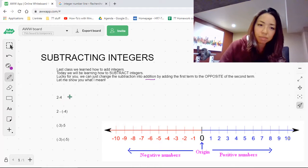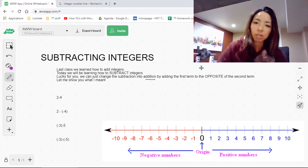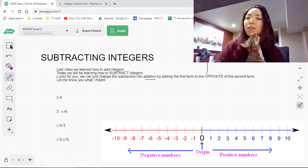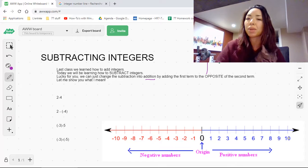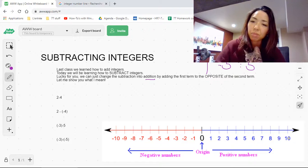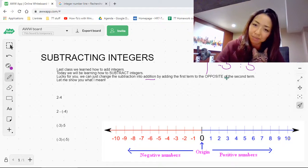So I'll show you how to change it into addition. You need to add the first term to the opposite of the second term. So just a quick reminder of what is opposite. The opposite of 3 is negative 3. The opposite of negative 5 would be positive 5. Remember the opposites are equidistant. They're equally distant from 0. So 3 is 3 spaces from 0, and negative 3 is also 3 spaces from 0. That's why opposites cancel each other out.